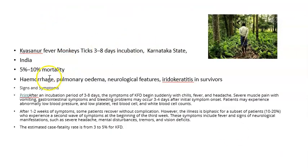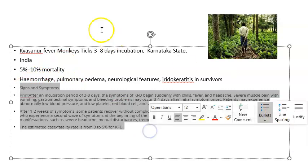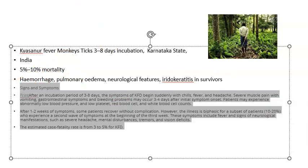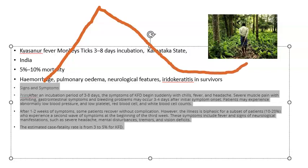KFD causes a biphasic fever. After 3 to 8 days of incubation, the patient suddenly develops fever, chills, headache, muscle pain, and gastrointestinal symptoms like vomiting and diarrhea. Bleeding problems appear — from mouth, nose, and blood in stools due to intestinal bleeding. The patient may then improve temporarily.